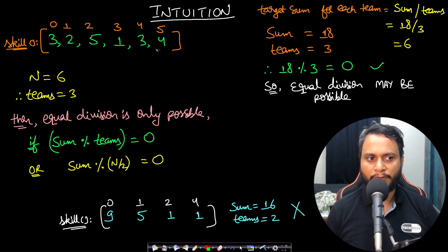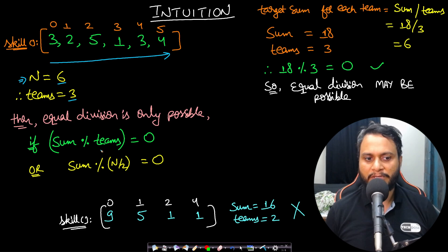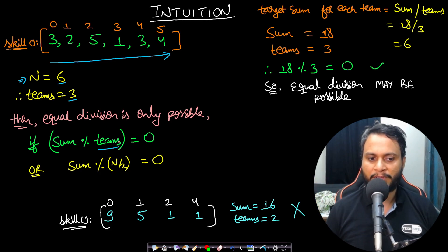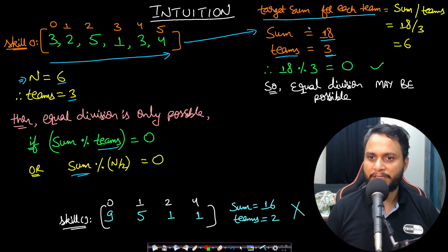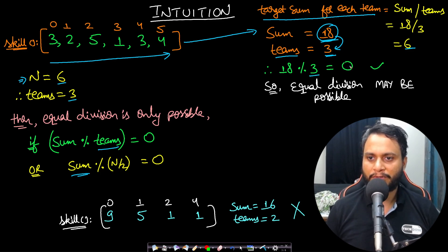Using the same array 3, 2, 5, 1, 3, 4, n = 6 so the number of teams is n/2 = 3. Equal division is only possible when the total sum of skills is divisible by the number of teams. The sum is 18, and 18 divided by 3 teams gives a target sum of 6 per team. So the total sum 18 must be divisible by 3, otherwise equal division is impossible.